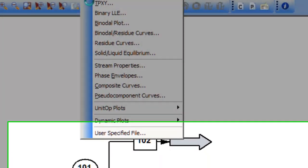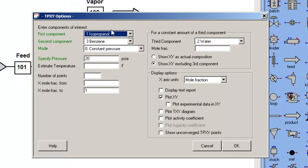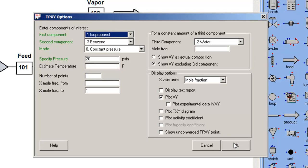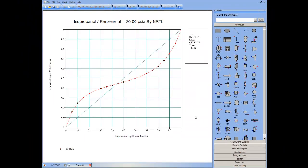In this case, I want to explore the impact of a trace component on the isopropanol benzene phase behavior. So first, plotting it as a binary at constant pressure of 20 psi, looking only at the XY plot, I arrive at a classic homogeneous azeotrope with the azeotrope composition approximately 45% isopropanol.